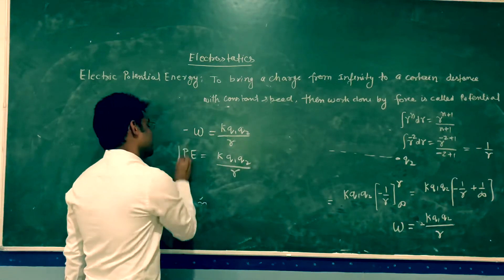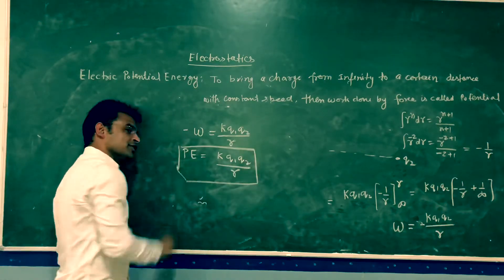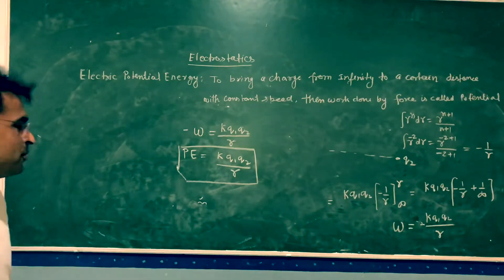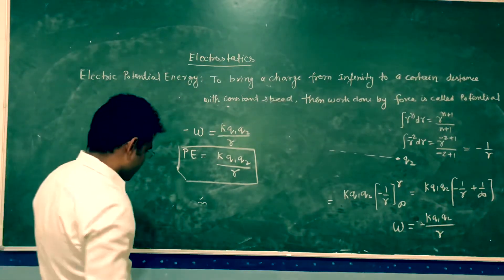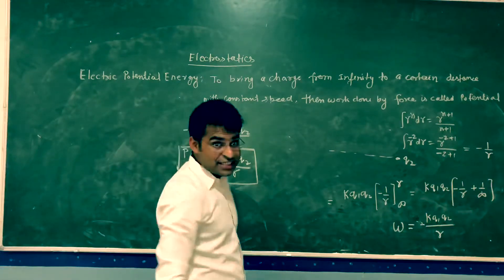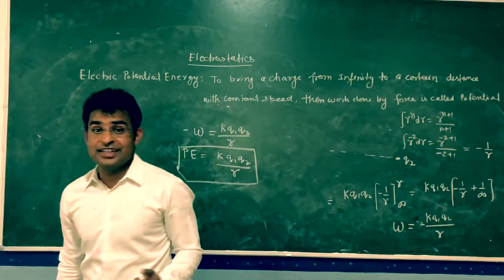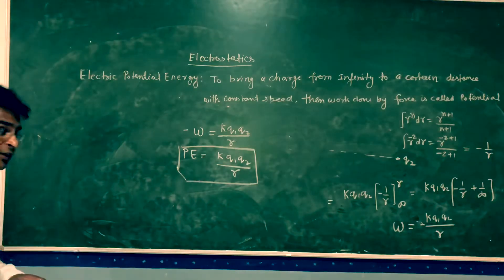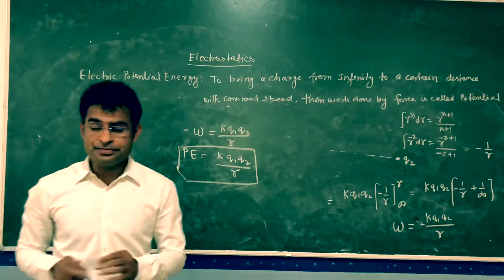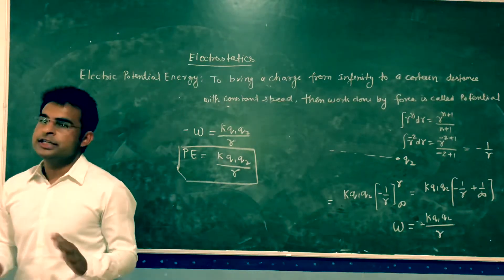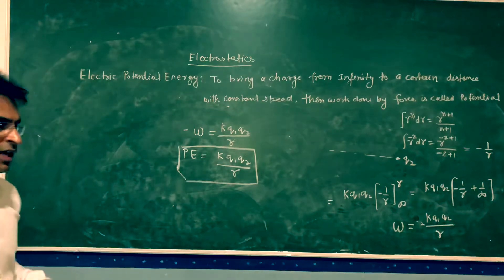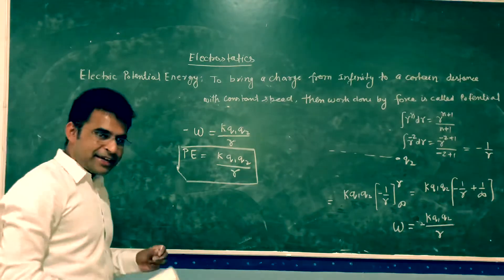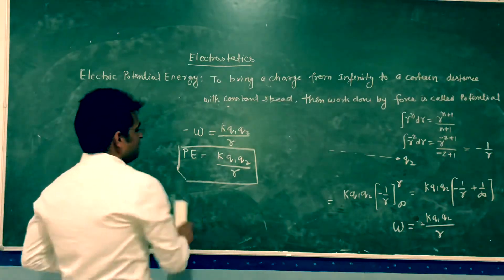The unit of potential energy is joule, and its dimension is ML²T⁻². It is a scalar quantity, not a vector. So whenever you find the total energy of a system, you simply add the individual potential energies — just like scalars, without any direction.